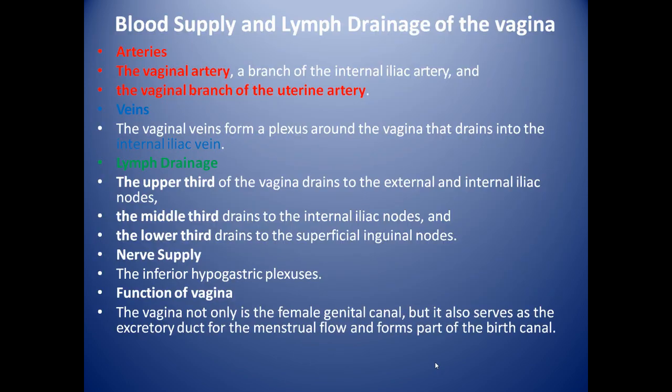Now we will see the blood supply and lymph drainage of the vagina. Arteries: the vaginal artery, which is a branch of the internal iliac artery, and the vaginal branch of the uterine artery. Veins form a plexus around the vagina that drains into the internal iliac vein. Lymph drainage: the upper third drains to the external and internal iliac nodes, the middle third drains to the internal iliac nodes, and the lower third drains into the superficial inguinal nodes. Nerve supply is from the inferior hypogastric plexus.